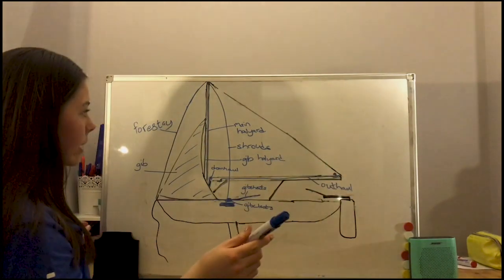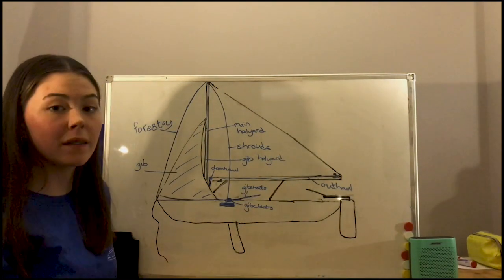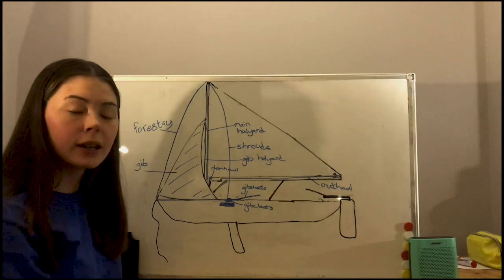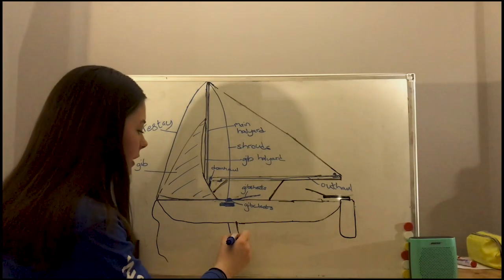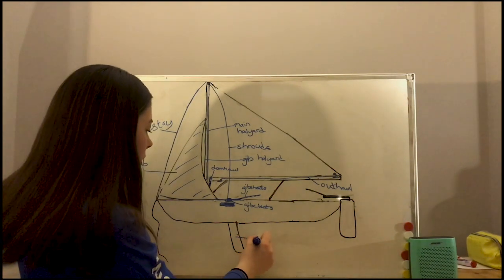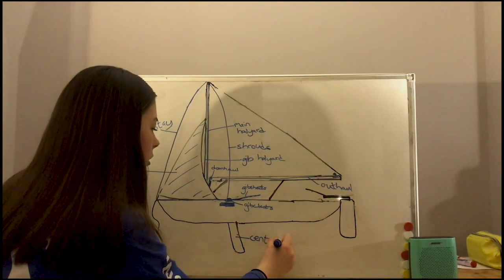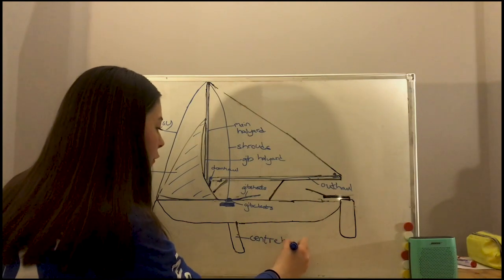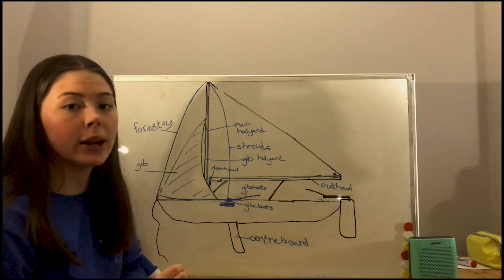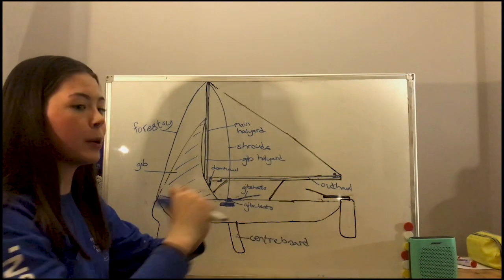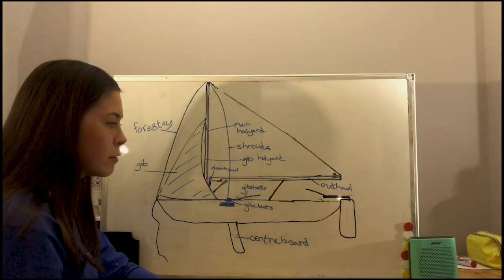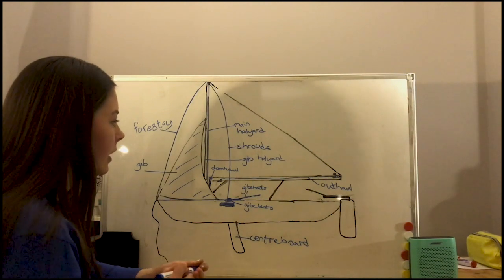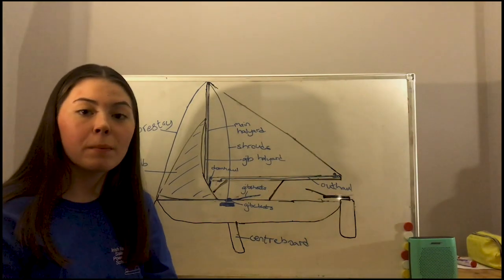And now also on double-handers, we have a difference with our dagger board. So dagger boards are pulled in and out of the water, up and down. But on our double-handers, these centre boards stay on the boat and are fixed around a turning point. So you pull them off and pull them down in and out of the water, but they don't completely remove from the boat. So we'll go look at a different view of our boat now.